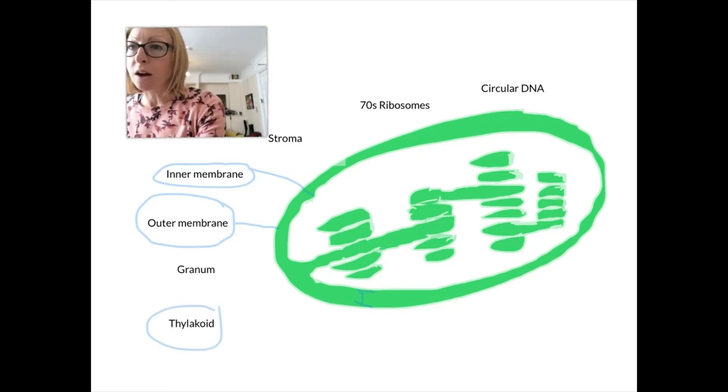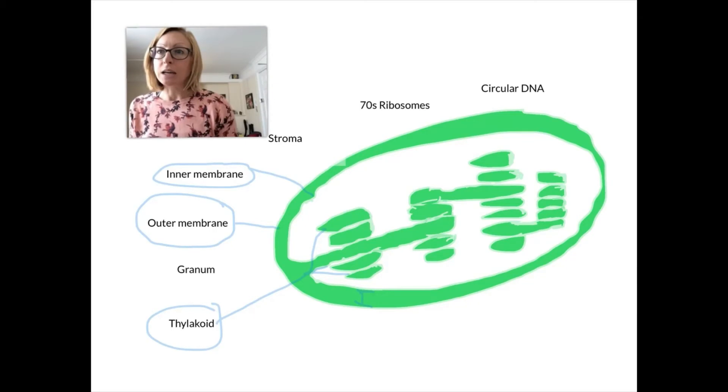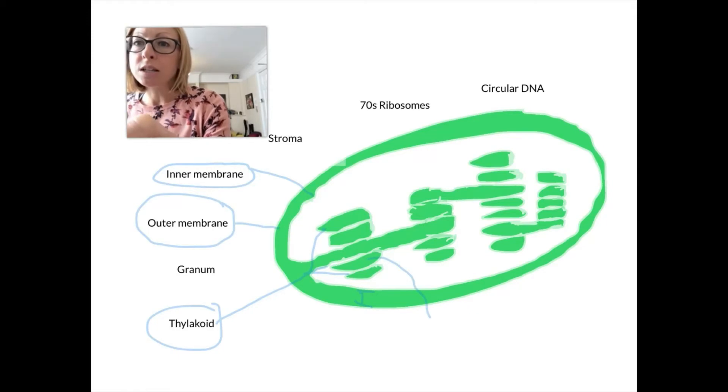Going on from there, we've got these thylakoids. Each of these small extensions that you can see, which is a flattened sac, each of those individually is a thylakoid. You can see they're green, and each of them contains the pigment chlorophyll.